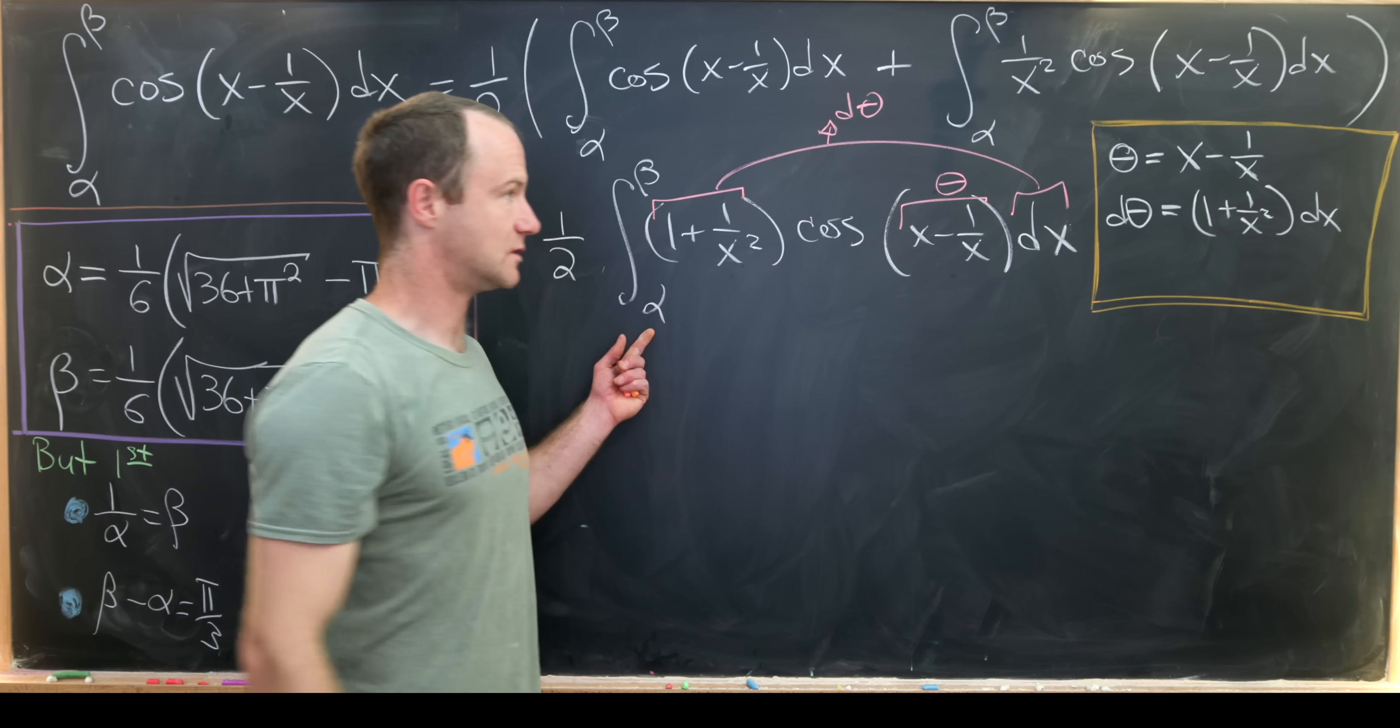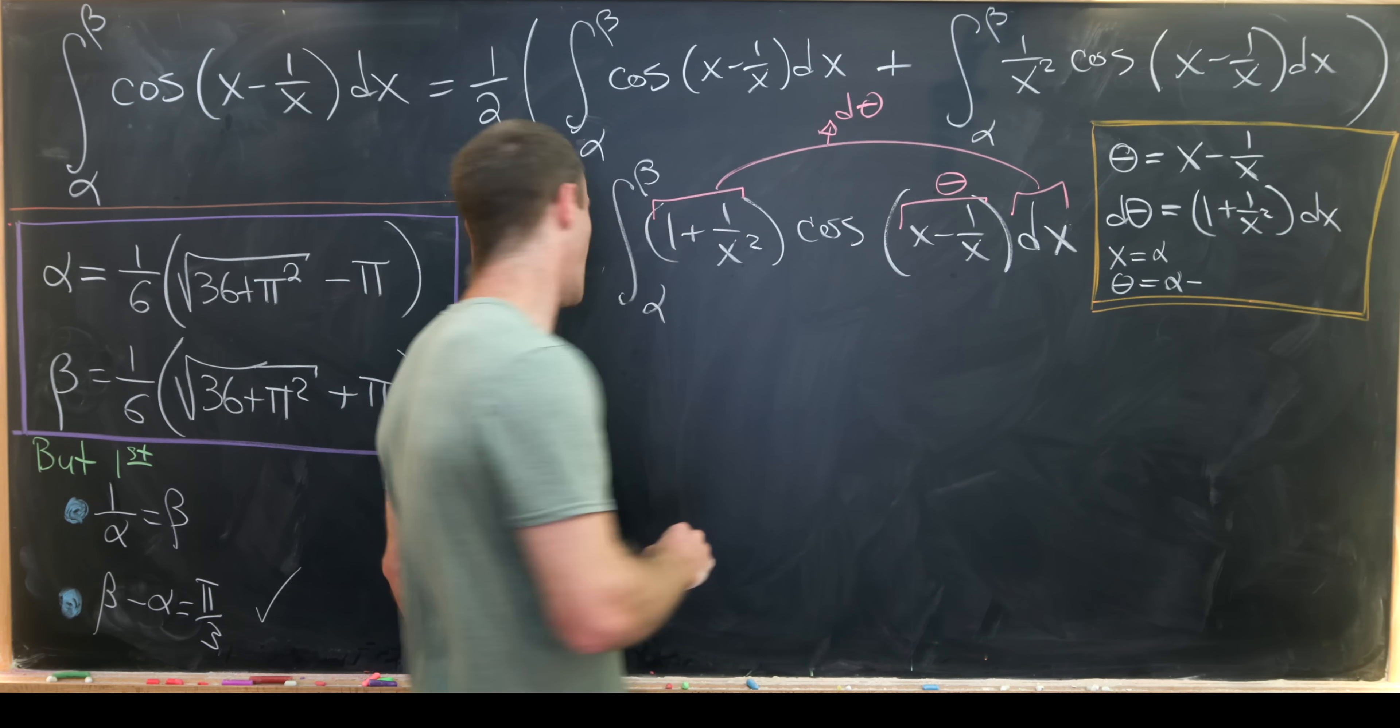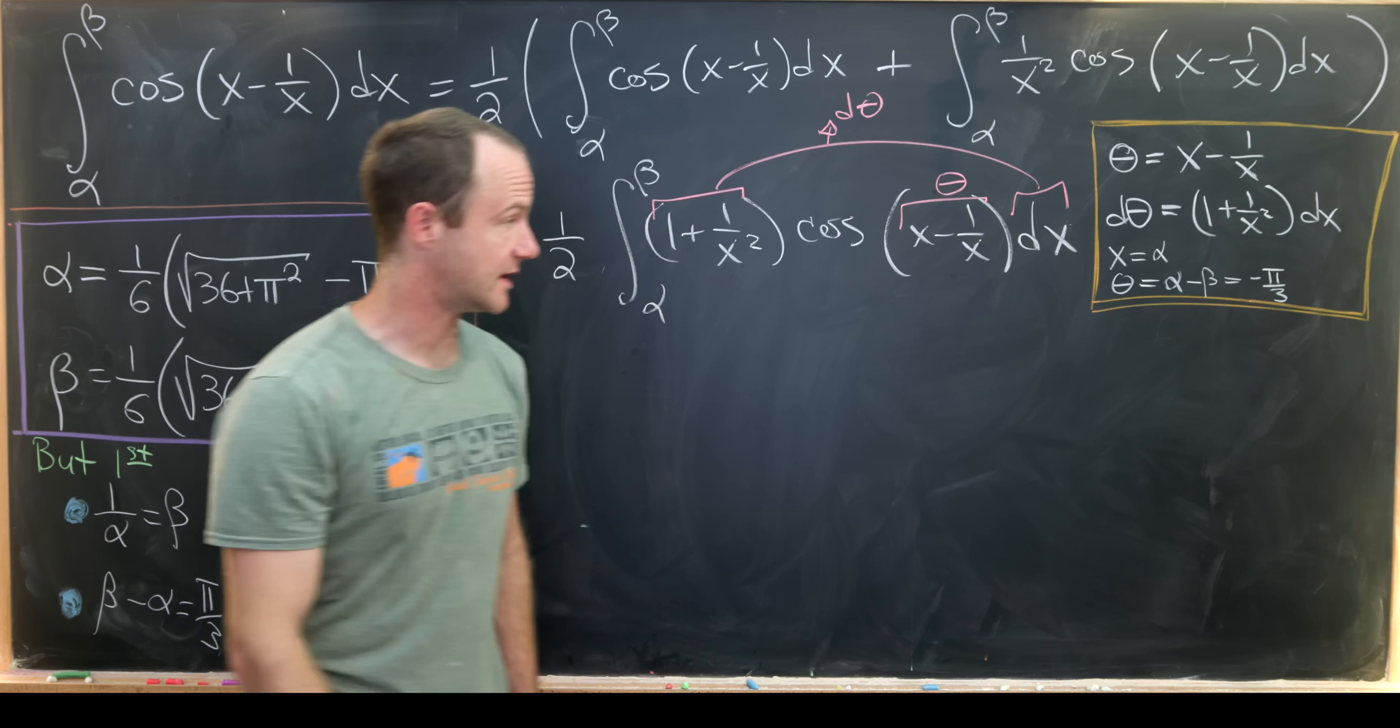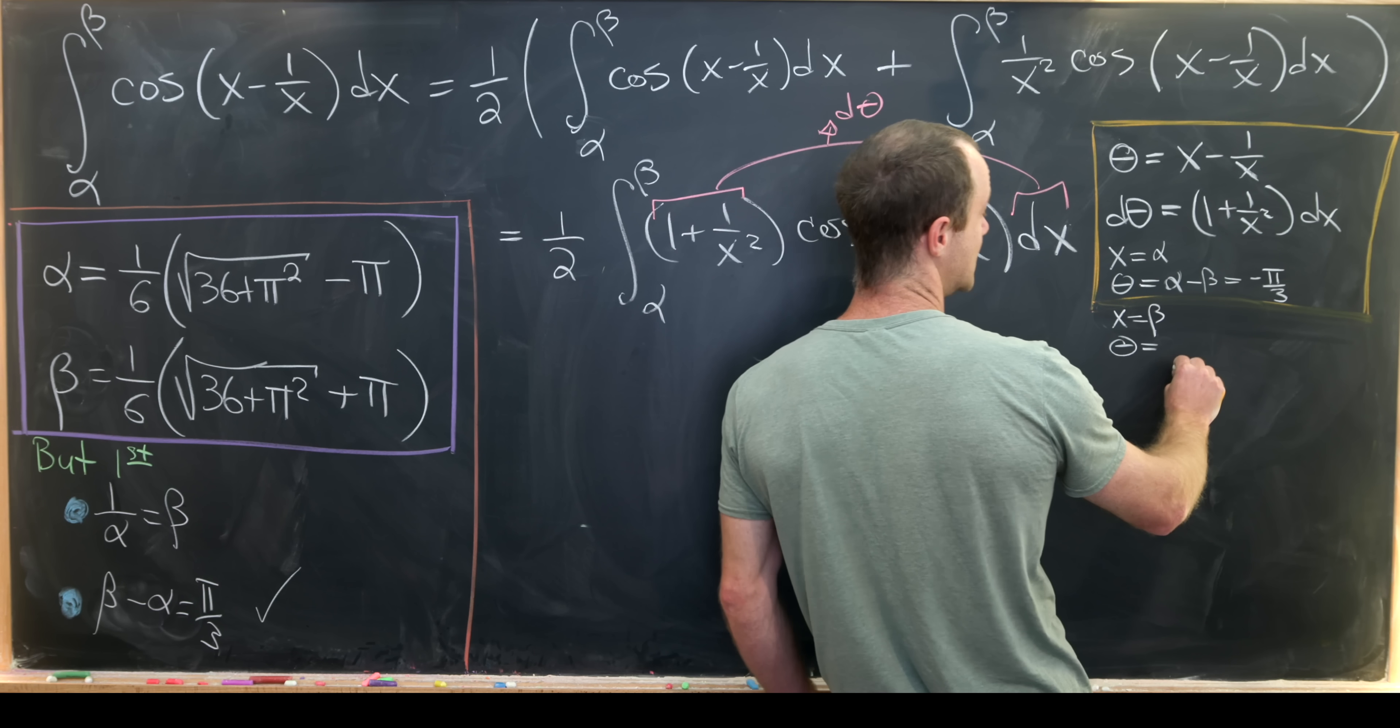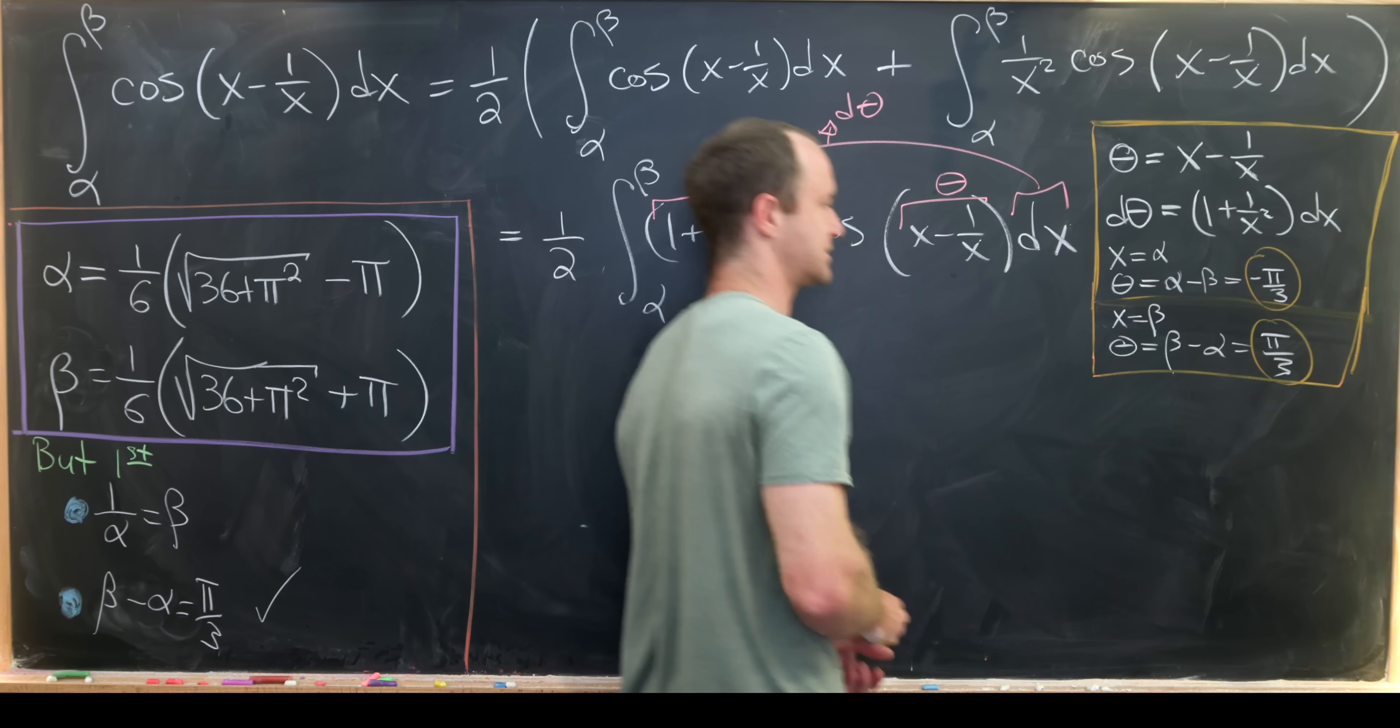Now let's see what happens to our bounds of integration. So when x equals alpha we have theta is equal to alpha minus 1 over alpha but we showed that 1 over alpha was beta so we have alpha minus beta which is minus pi over 3. So that happens when x is alpha. When x is equal to beta that means that theta is equal to beta minus 1 over beta which was alpha so that's pi over 3. So that gives us this nice symmetric region of integration from minus pi over 3 to pi over 3.